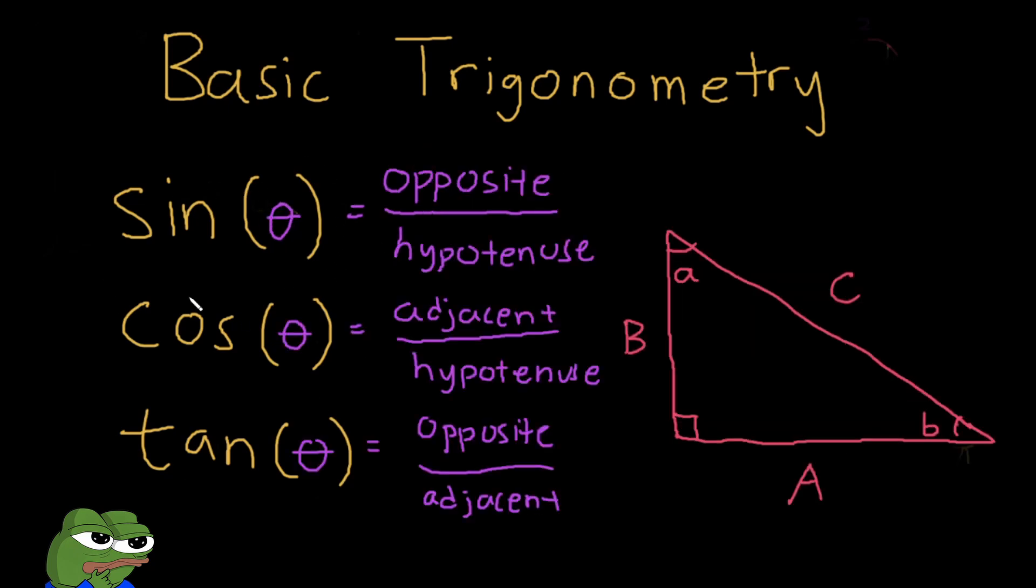We already did sine earlier, but it's basically the opposite over the hypotenuse side given an angle theta. You can remember this by SOH. Now for cosine, you take your angle theta and it outputs the adjacent side over the hypotenuse side.